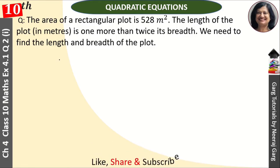Exercise 4.1, question number 2. The area of a rectangular plot is 528 square meters. The length of the plot is one more than twice its breadth. We need to find the length and breadth of the plot.